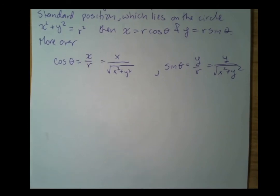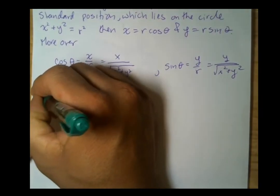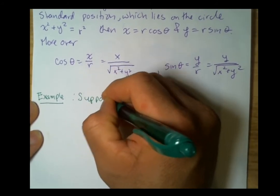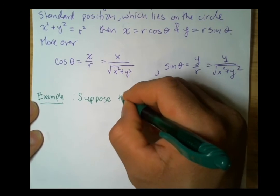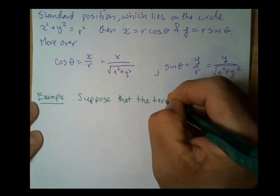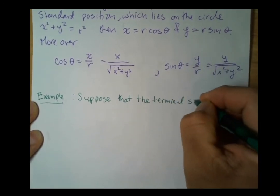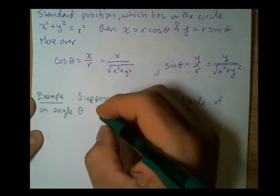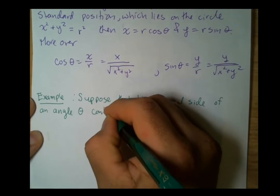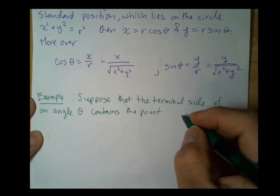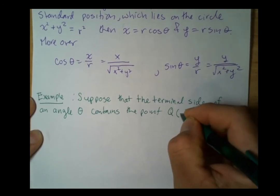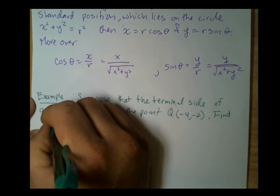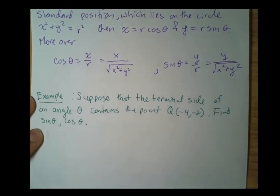Let's work through an example with actual values. Suppose that the terminal side of an angle theta contains the point Q(-4, -2). Find sine theta and cosine theta.